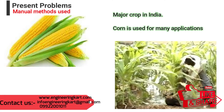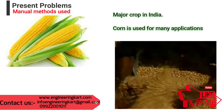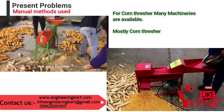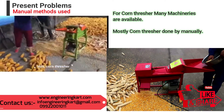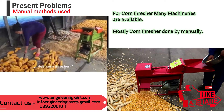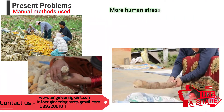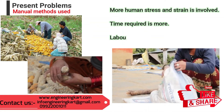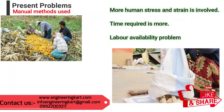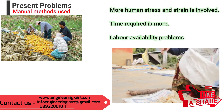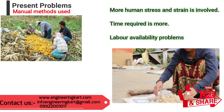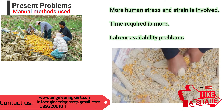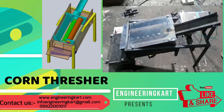To meet the requirement and demand of corn from the commercial market and society, technology is required to avoid heavy time consumption and labor problems. Currently, corn separating is mostly done manually, and farmers and laborers face many problems: physical stress and strain, more time required, less labor availability, and high labor cost per hour.